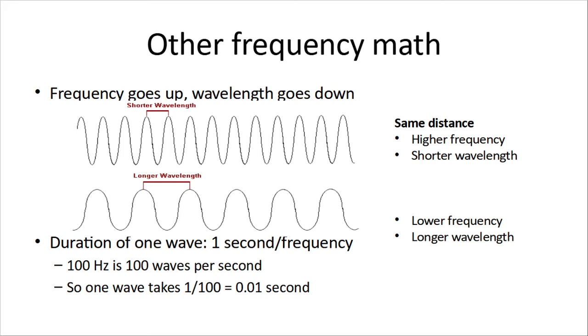100 hertz is 100 waves per second. So, one wave takes 0.01 second, or 1 one-hundredth of a second. That's the duration of the wave.